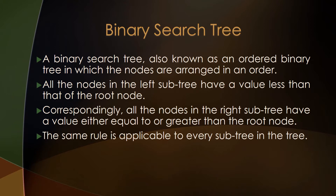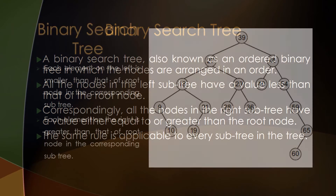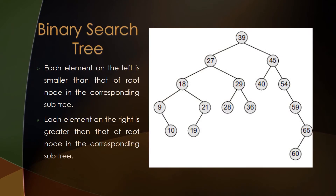The same rule is applicable to every subtree of the binary search tree. For example, with 39 as the root node, all nodes to the left of 39 have a value less than 39, and all nodes to the right of 39 have a value greater than 39. This is a major property of a binary search tree.